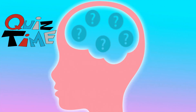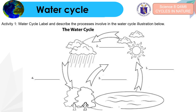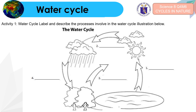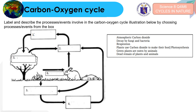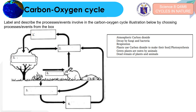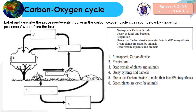Let's check how much you've learned from today's video. For the first activity, describe the processes involved in the water cycle illustration. You may pause the video while answering and press play to check your answers. For the second activity involving the carbon-oxygen cycle, try to label and describe the processes shown in the illustration by choosing from the options provided. Pause and then press play to check the correct answers.